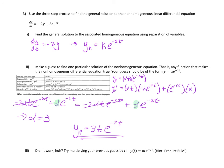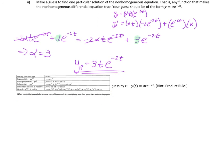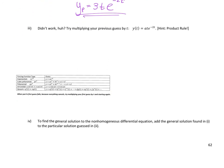The general solution is the sum of y homogeneous and y particular. So y general equals k e to the negative 2t plus 3t e to the negative 2t.